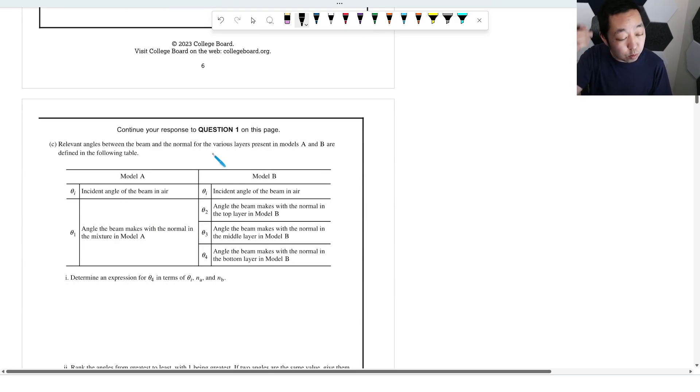Relevant angles between the beam and the normal various layers are present in models A and B. Incident angle in the air theta I, it makes with the normal theta 1, theta 2, theta 3, theta 4. So it's just all the different angles there. Determine expression for theta 4 in terms of theta I, NA, and NB.